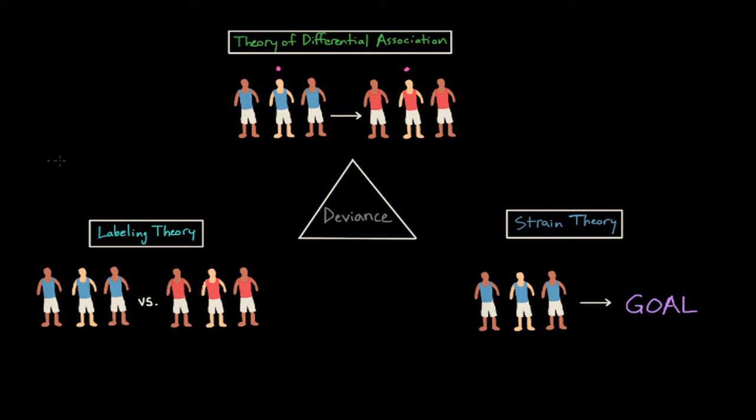The new team members may even show the athlete how to be deviant by demonstrating how to take a particular drug or introducing the athlete to a new type of steroid. The athlete rejects his norms and values and accepts the new deviant behaviors.